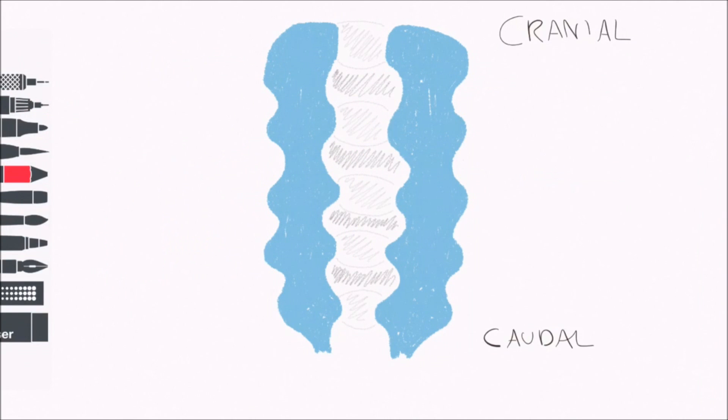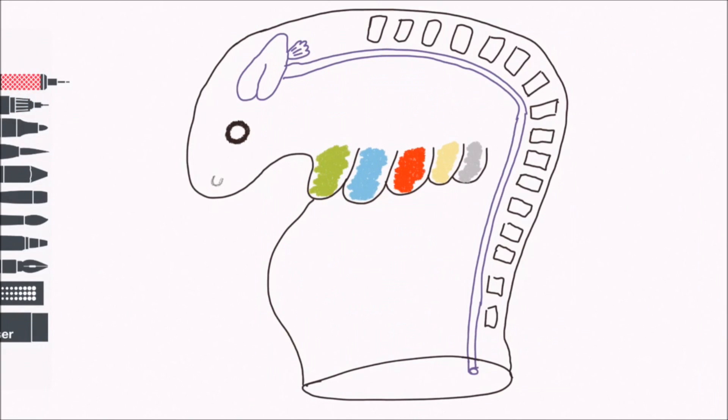Let's move on to the thyroid. The thyroid first appears as a structure called the thyroid diverticulum, a thickening of endoderm between the first and second pharyngeal arches in the midline of the embryo. Let's look at a sagittal section so that we can see what happens next better.